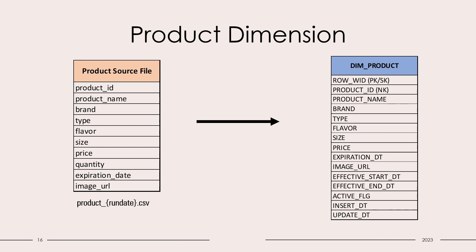To load the product dimension, we have the product source file which is product_rundate.csv. We have all the columns mentioned and we'll load the data into the product dimension, which is SCD type 2. It also has the mandatory audit columns: effective start date, end date, active flag, insert date, and update date.